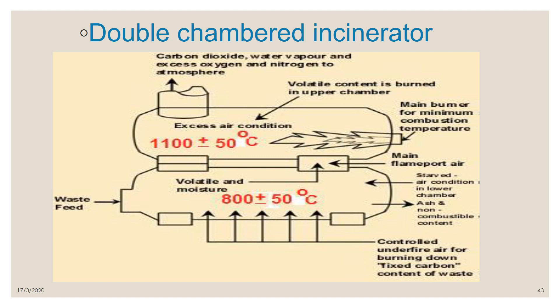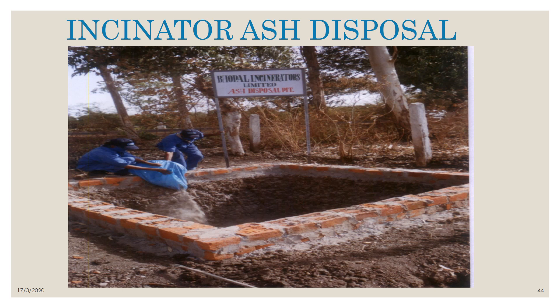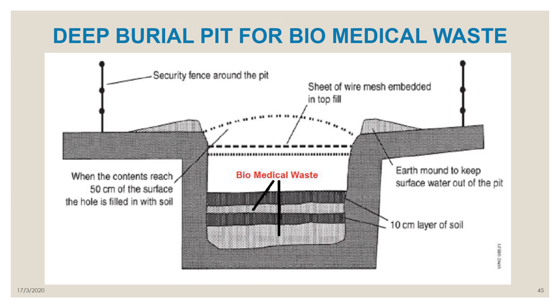In double-chamber incineration, approximately 70% of destruction occurs in the first chamber and the remaining 30% in the second, achieving 100% waste disposal. For incinerator pit disposal, specifications must be followed regarding weight, length, depth, brick construction, and whether concrete lining is required inside the pit.